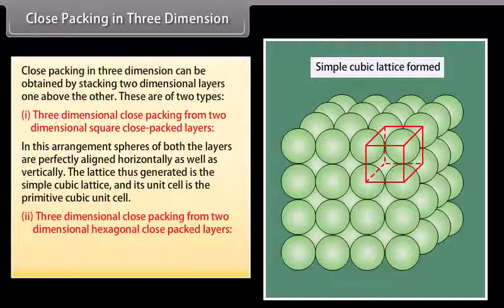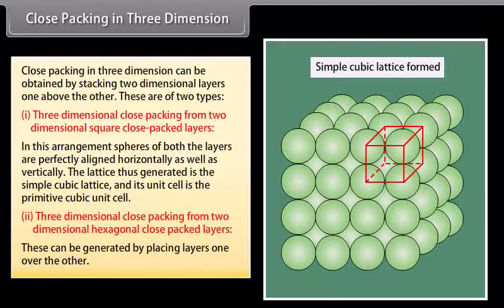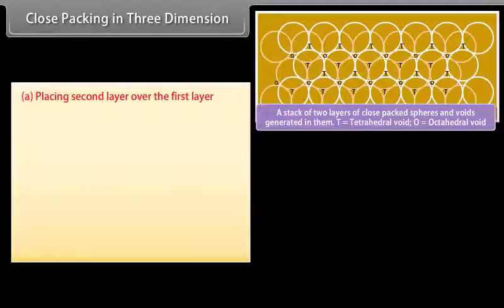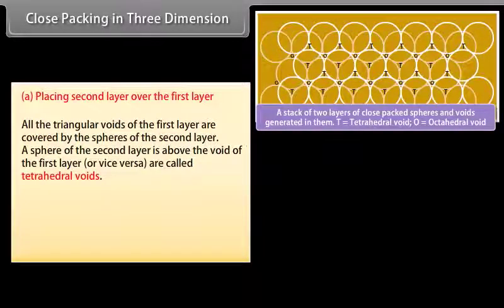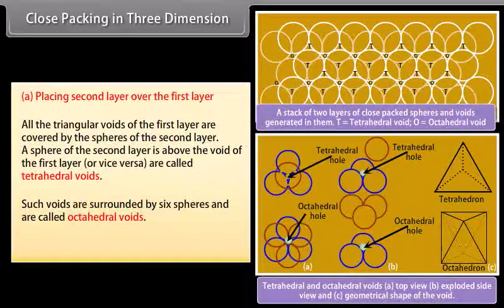Three dimensional close packing from two dimensional hexagonal close packed layers can be generated by placing layers one over the other. When placing the second layer over the first, all the triangular voids of the first layer are covered by the spheres of the second layer. A sphere of the second layer above a void of the first layer creates tetrahedral voids, while voids surrounded by six spheres are called octahedral voids.